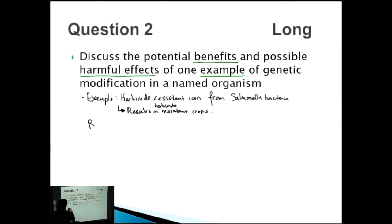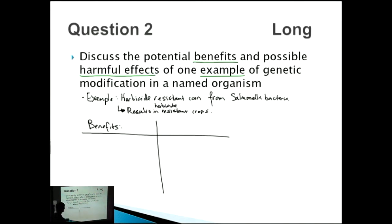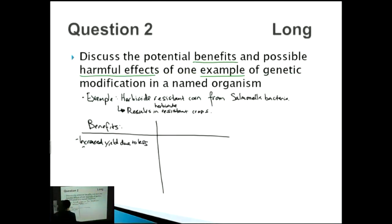The benefits: because you can use herbicides to kill off the weeds next to the corn, the corn will grow at a faster rate due to less competition. If it grows at a faster rate, the corn grown will be bigger and better — so increased yield due to less competition. The weeds are killed off.